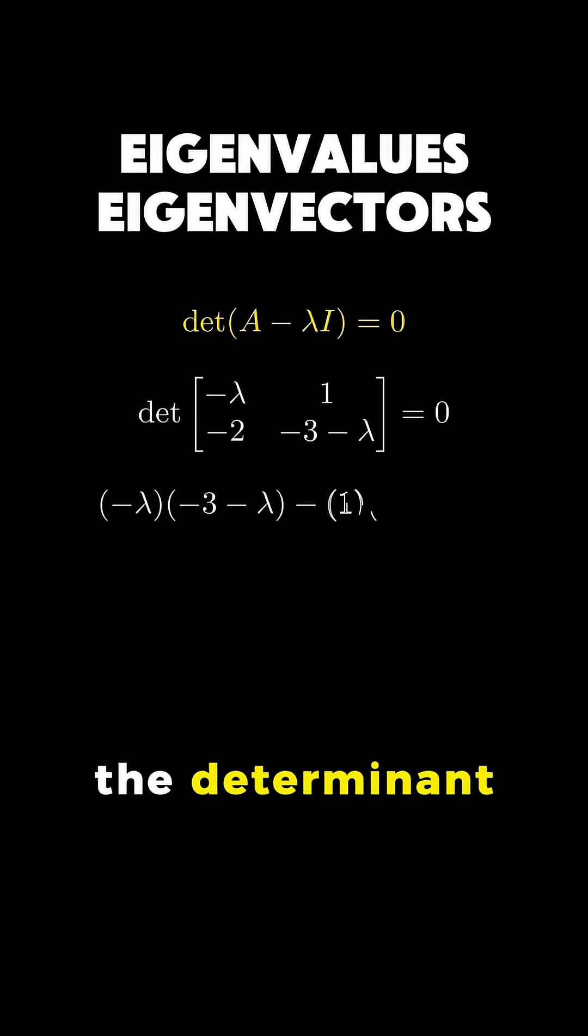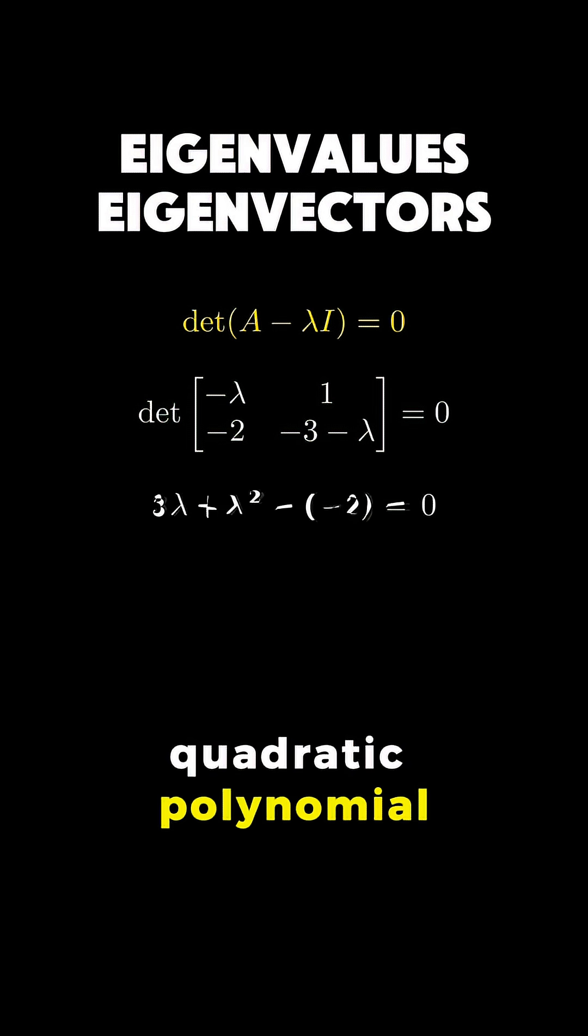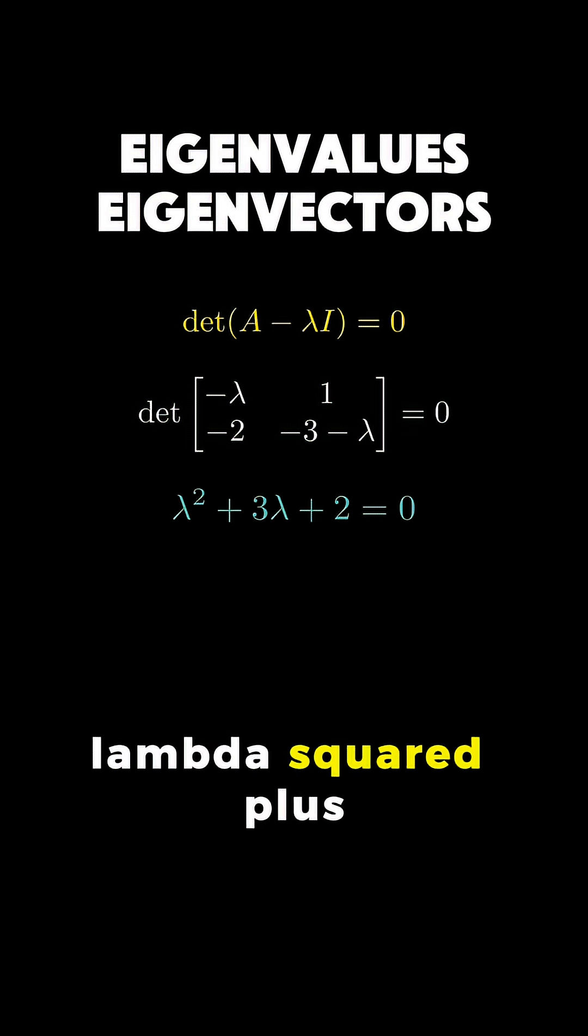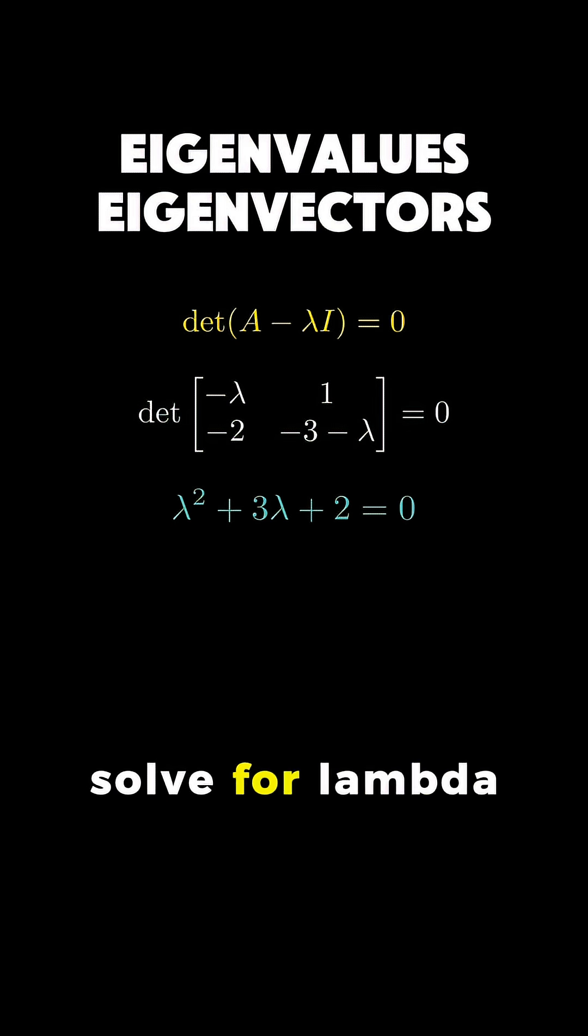Calculating the determinant gives us a quadratic polynomial: lambda squared plus 3 lambda plus 2. Setting this polynomial to zero allows us to solve for lambda.